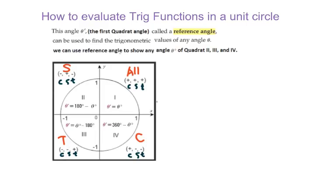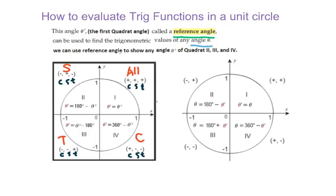This lesson is about how to evaluate trig functions in a unit circle. First, let's talk about reference angle. Reference angle can be used to find trig values for any angle theta. We already went through this last class — using reference angles to show any angle in a different quadrant. Today we will figure out the reference angle if we are given any angle.